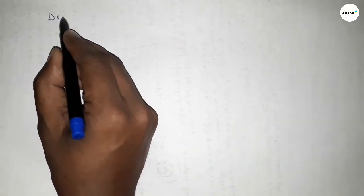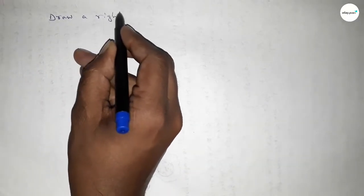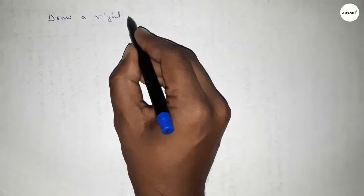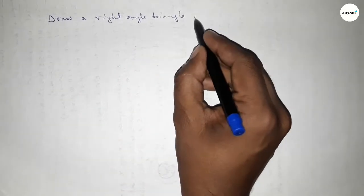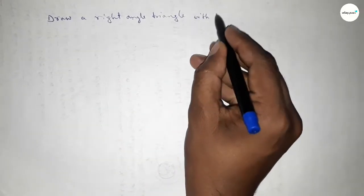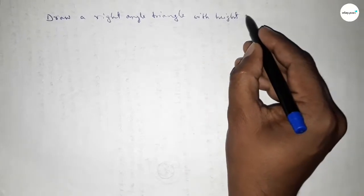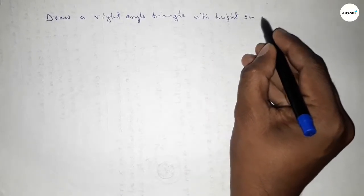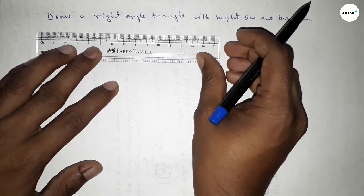Hi everyone, welcome to SSR Classes. Today in this video we have to draw a right angle triangle with height 5 centimeters and base 3 centimeters. So let's start constructing a right angle triangle.